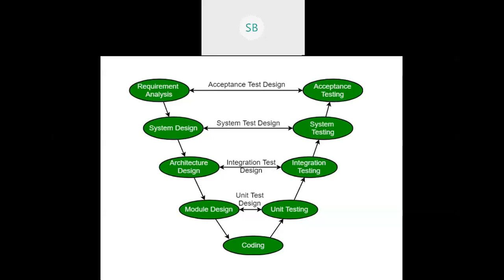After unit testing, we go for integration — combining two or three modules together and testing them. This is integration testing: taking not one but two or three modules together. For example, whether registration and login are working together — registration is one module, login is another module. If we put them together, we check if they are working properly.